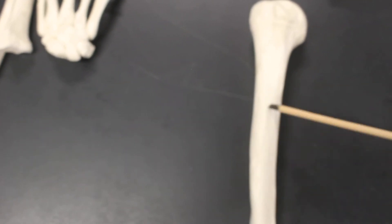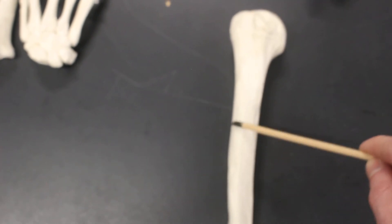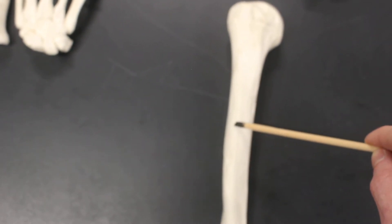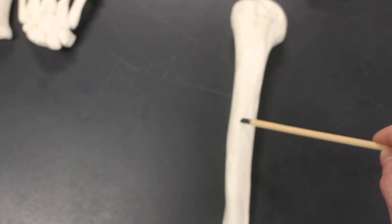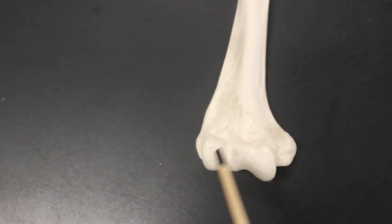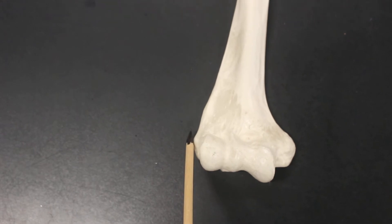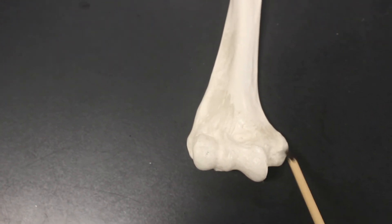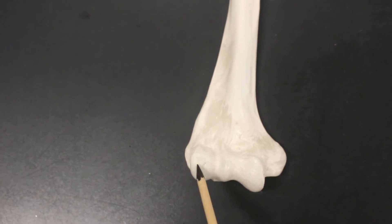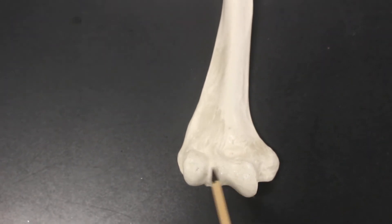About a third of the way down, there's this rough patch. You can just almost assume isn't there. That's the deltoid tuberosity. And we go all the way down to the distal end. Here we have the lateral epicondyle and the medial epicondyle. This is the capitulum. This is the trochlea.